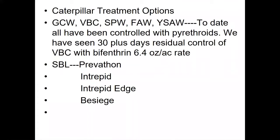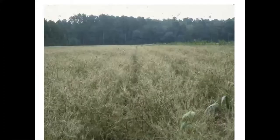For caterpillar treatment options, we can control all the caterpillars that attack soybeans easily with pyrethroids, and we can get 30-plus days residual control on caterpillars except for loopers. The products preferred for soybean looper control are Prevathon, Intrepid, Intrepid Edge, and Besiege. You can have severe defoliation in your soybean fields if you don't keep them checked — they can totally denude the field.